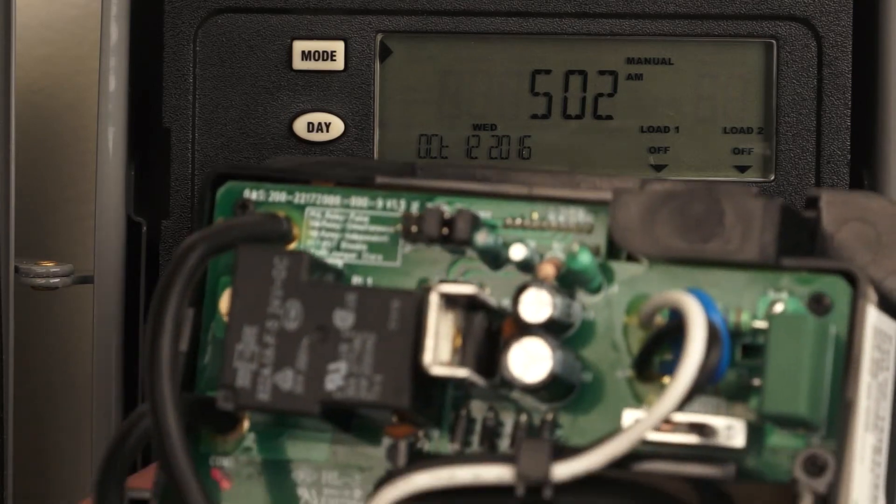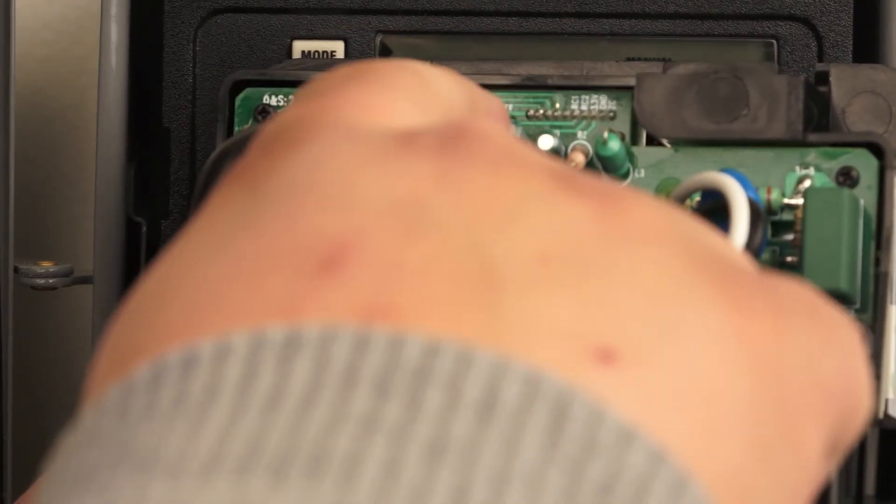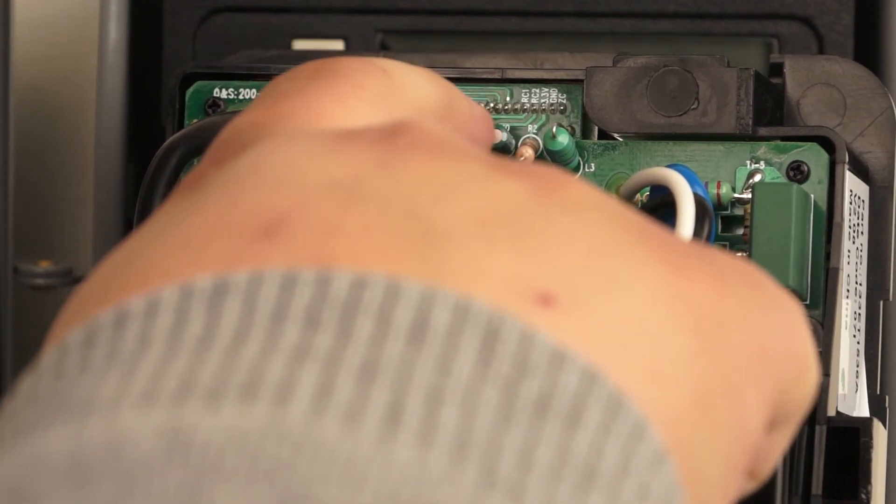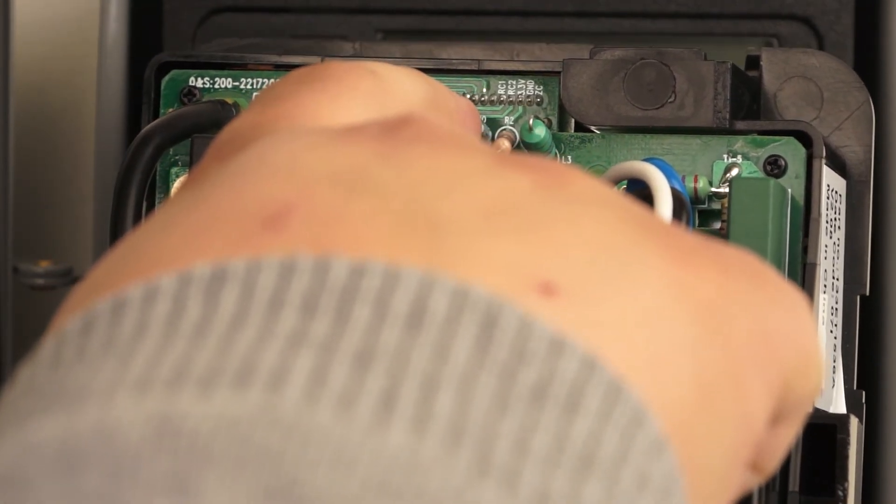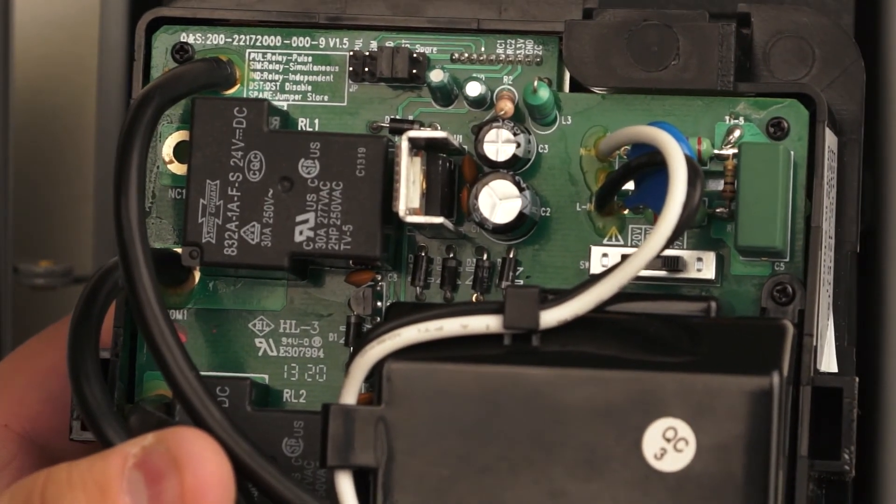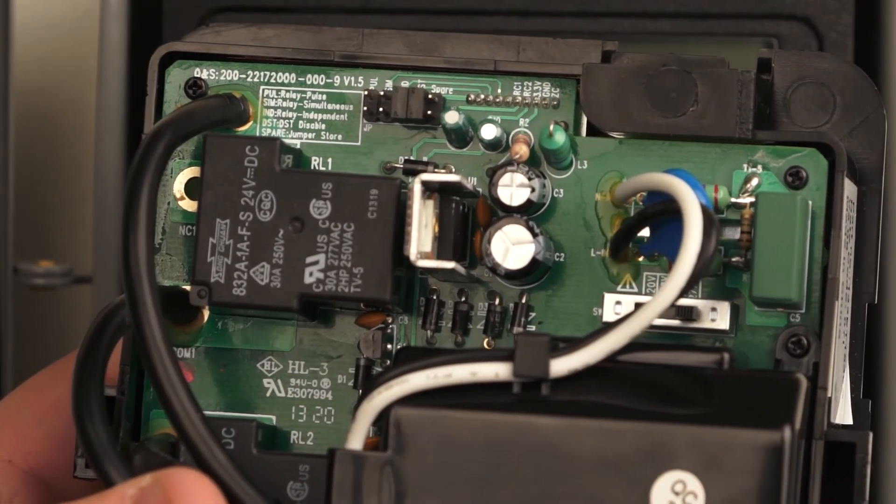The jumper is located on the top. It will say daylight, it will say DST at the top and it will have a spare jumper. You move this spare clip as shown and you move it to the DST if you want it to remove daylight savings time.